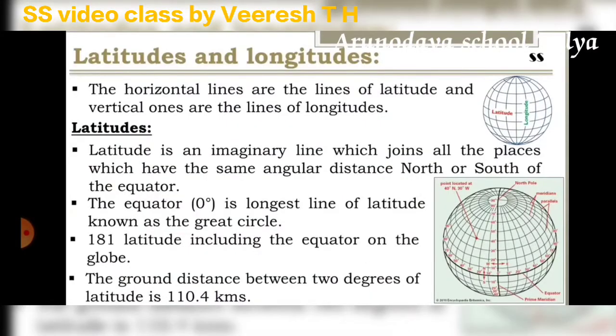The equator at zero degrees is the longest line in latitude, known as the great circle.